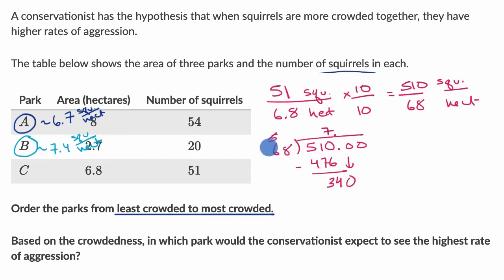Roughly 70 goes into 340. It might go five times. Five times eight is 40. Five times six is 30 plus four. It went exactly five times. So in park C, we're at 7.5 squirrels per hectare.